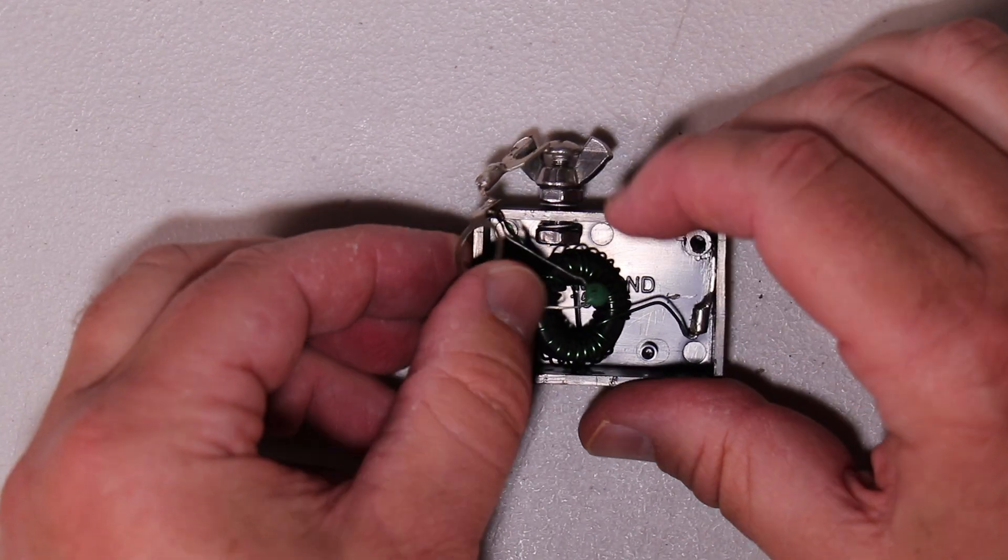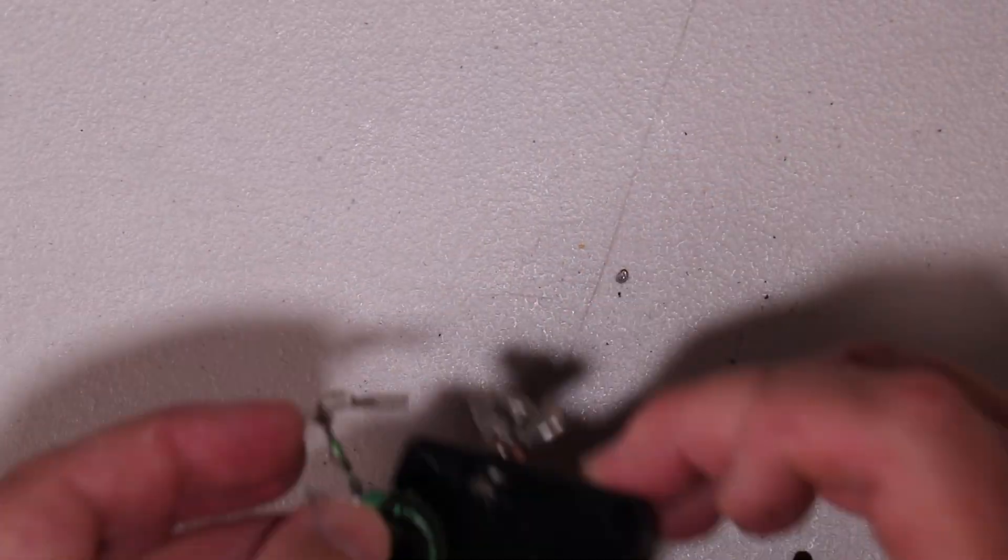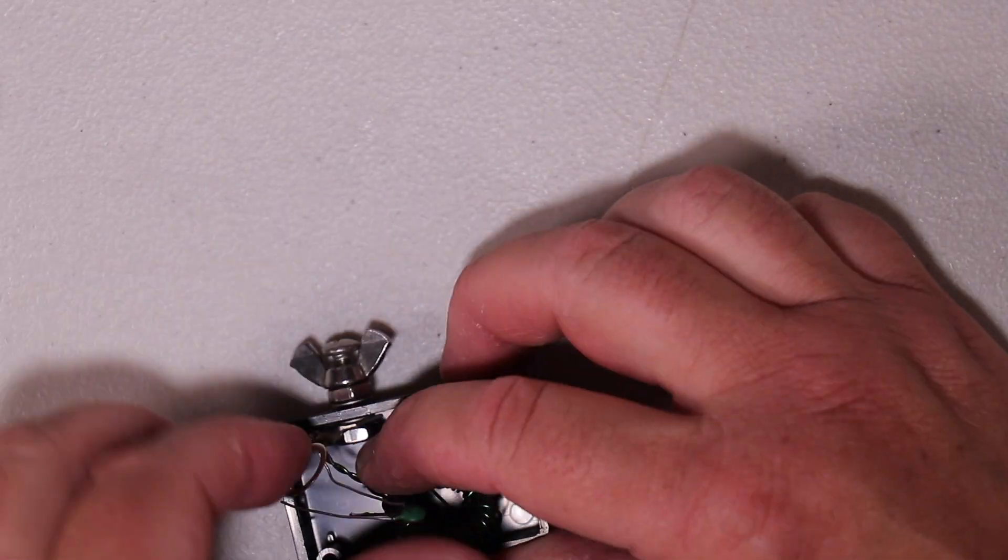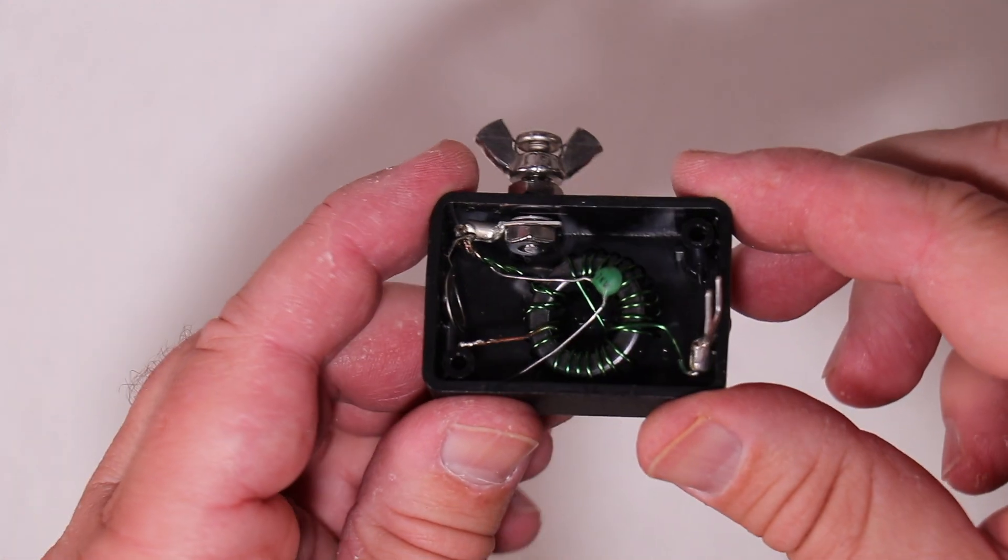Put in your toroid. This is the hard part, getting all this to fit. Okay we got the one for the counterpoise in.